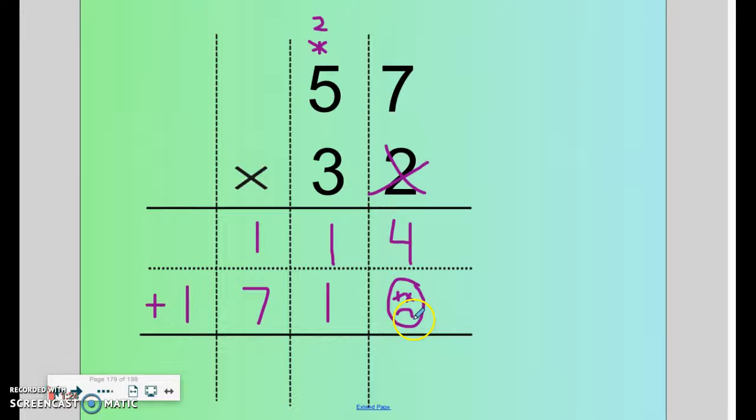Then we take the two rows and we add them. 4 plus 0 is 4. 1 plus 1 is 2. 7 plus 1 is 8 and we bring down the 1. 57 times 32 is 1,824.